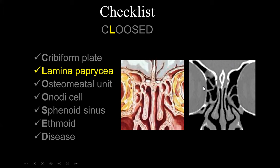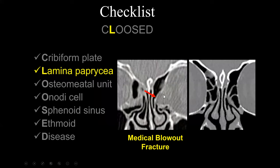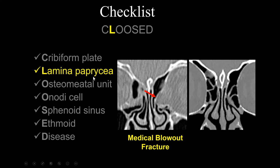The L in CLOSED is the lamina papyracea. It's a very thin, paper-like bone that forms the lateral wall of the ethmoid sinus and the medial wall of the orbit. It's important to evaluate this bone for certain pathologies. For example, if a patient is pre-op for endoscopic sinus surgery, we would want to inform the ENT surgeons about any defect in the lamina papyracea — in this case, due to a prior medial blowout fracture with herniation of fat and muscle into the defect.